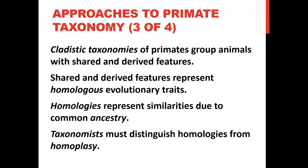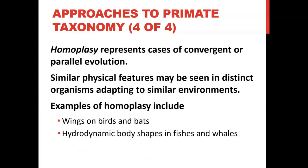The difficulty is deciding what is a homology and what is homoplasia. Homoplasia represents convergent or parallel evolution — similar physical features seen in distinct organisms adapting to similar environments. Basically, they have the same trait but from a different ancestor. A great example: the wings on birds and bats. A bird and a bat are not from the same ancestor even though they both have wings, so you need to determine whether those wings come from the same ancestor to decide how to group them.